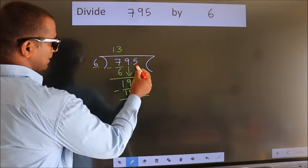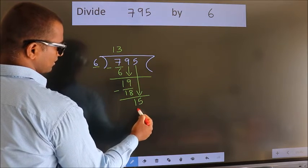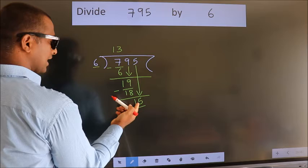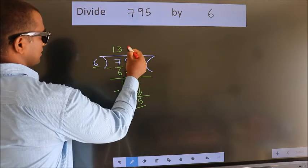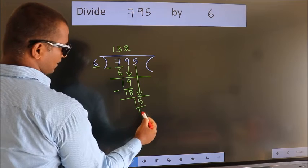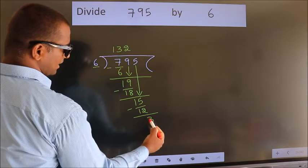After this, bring down the beside number. So 5 down, so 15. A number close to 15 in 6 table is 6 twos, 12. Now we subtract. We get 3.